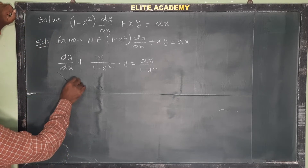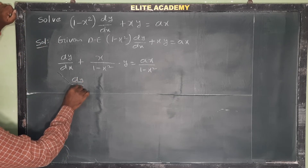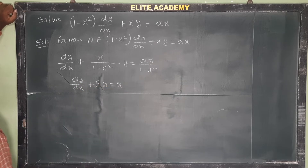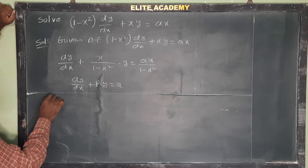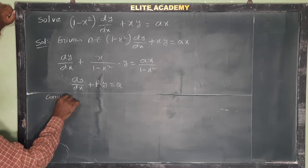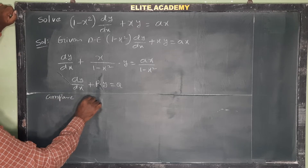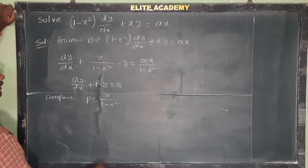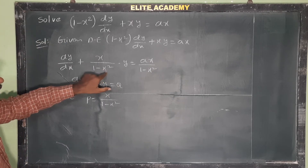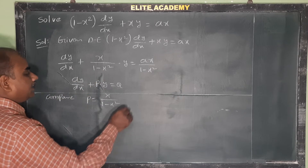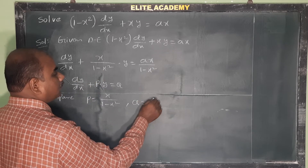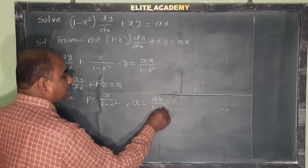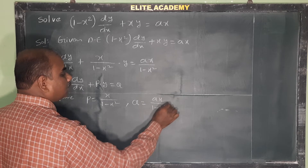It is now in general form: dy/dx + P·y = Q. Comparing, we get the values of P and Q. P is equal to x/(1 - x²), which is the coefficient of y. Q is equal to ax/(1 - x²).